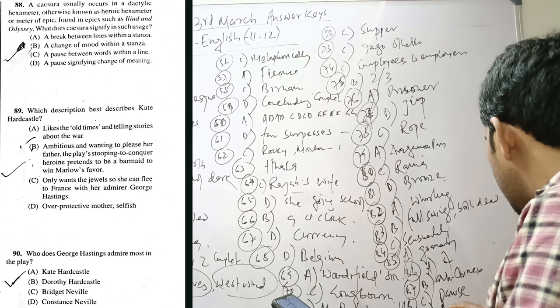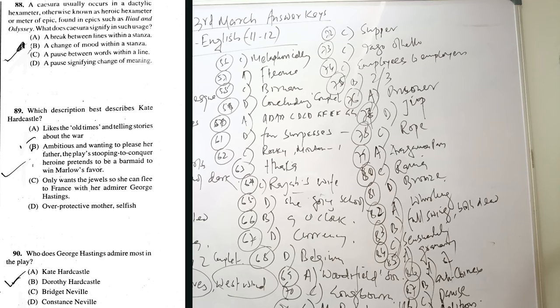Question 90. Finally. Who does George Hastings admire most in the play? George Hastings. So, George Hastings will surely admire his fiancée. Who is his fiancée? Constance Neville.